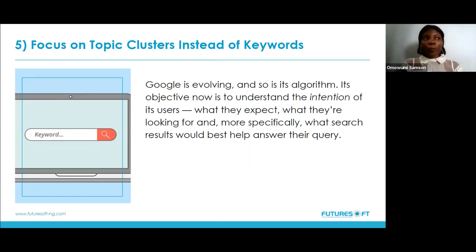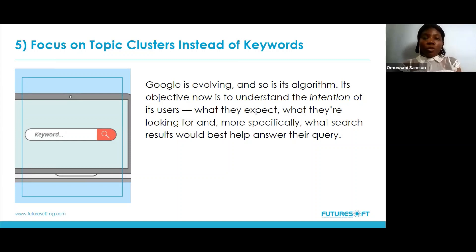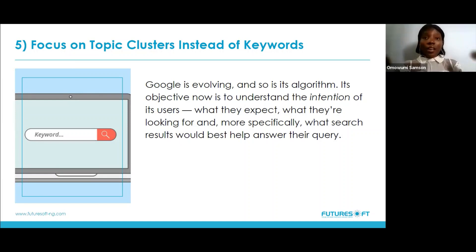Now let's look at topic clusters instead of just keywords. By topic clusters, we mean having a combination of keywords rather than just a single keyword — for example, instead of just 'web design' as a keyword, you could use 'web design agency' or even a topic cluster that captures all related keywords. Google is evolving and so is its algorithm. Google's objective now is to understand the intention of its users — it's more of a user element than just crawling and indexing.